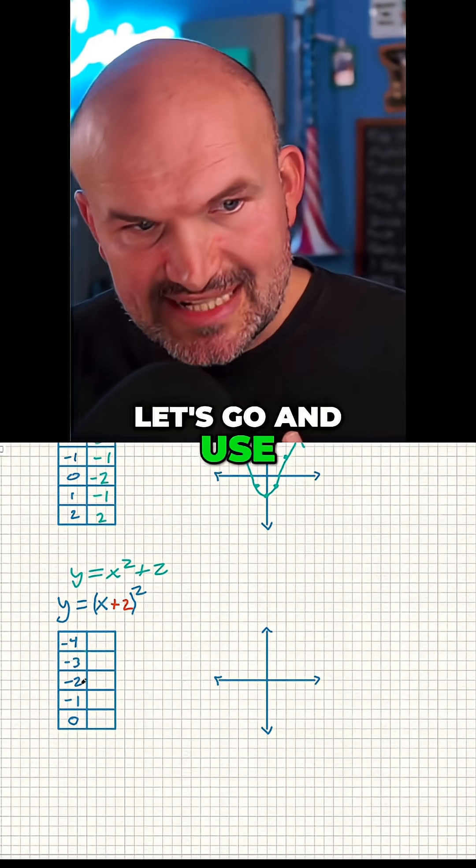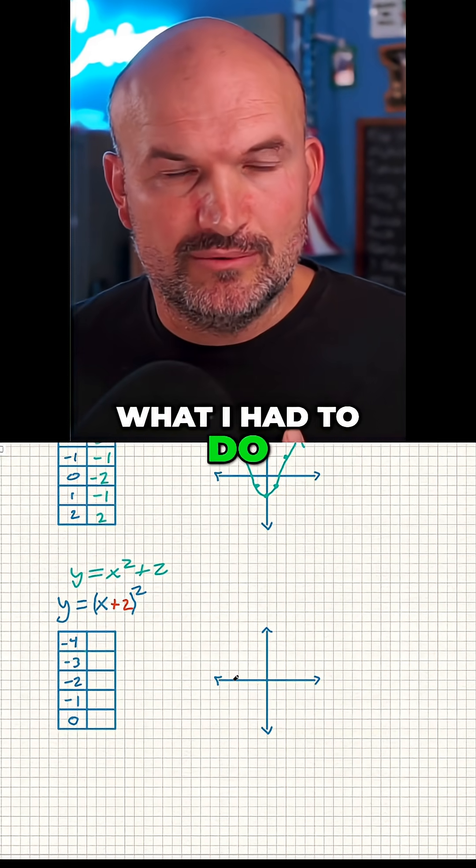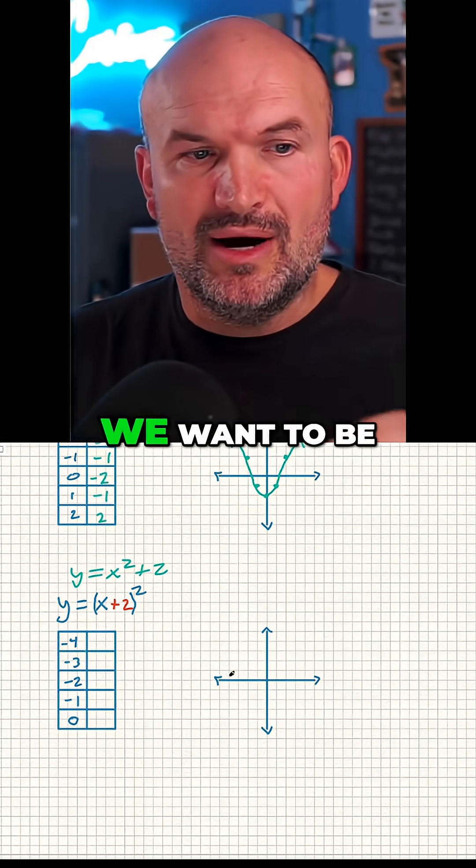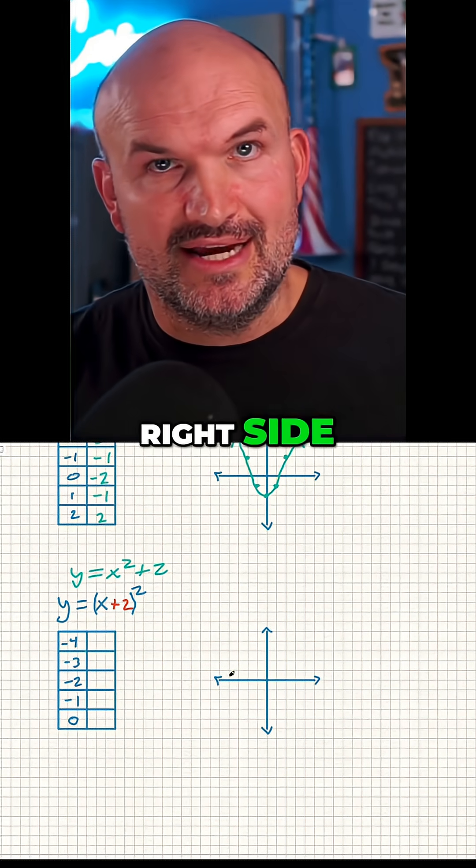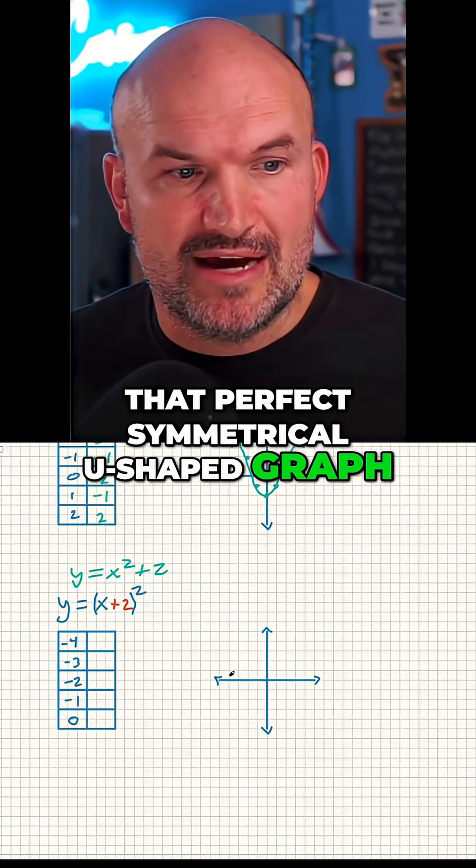Well, let's use these numbers first and you'll see what I had to do. Remember, ladies and gentlemen, we want to get both sides of the vertex - the left side as well as the right side - so we have that perfect symmetrical U-shaped graph.